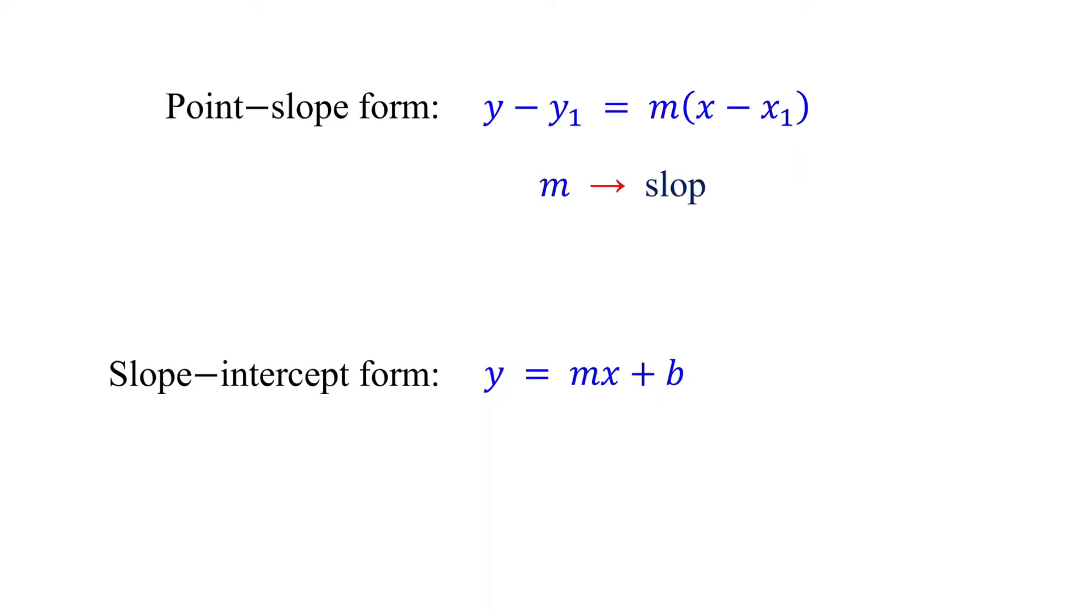In point slope form, M represents the slope and X1, Y1 represents a point on the line. In slope intercept form, M still represents the slope, while B represents the Y-intercept.